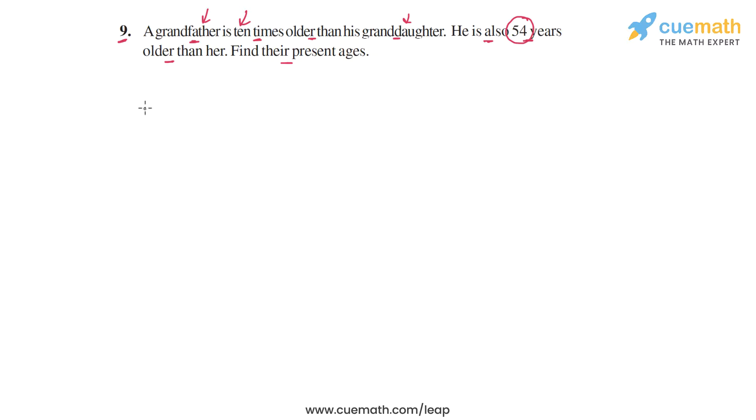So we can start by assuming the granddaughter's age to be some variable. We could assume either the grandfather's age or the granddaughter's age, so let's assume that the granddaughter's age is x years.